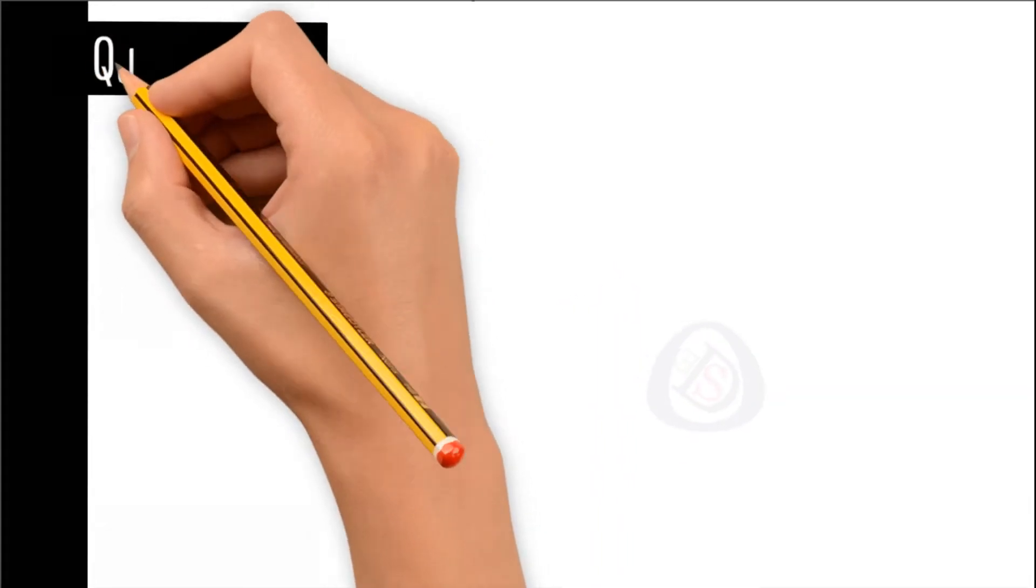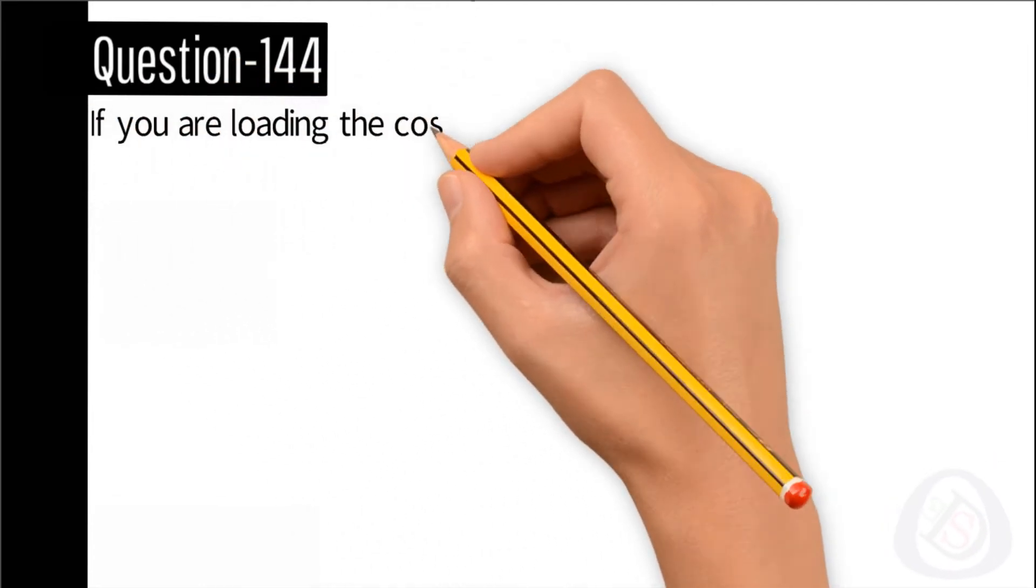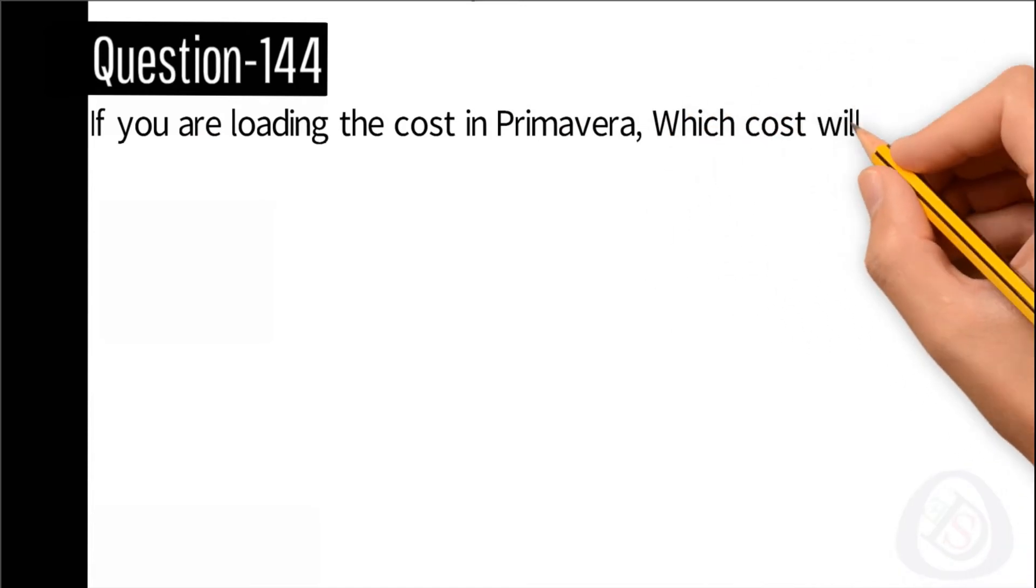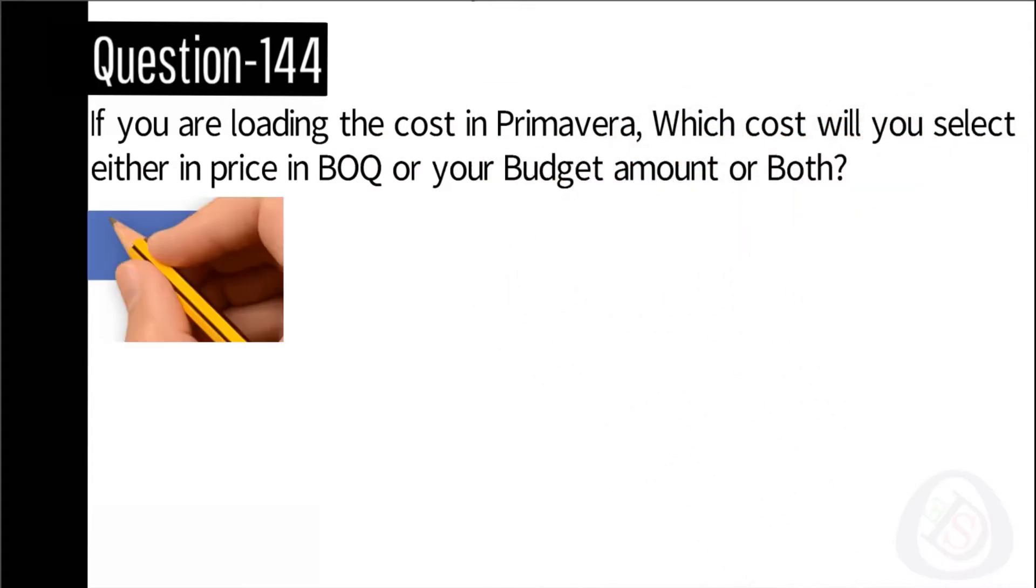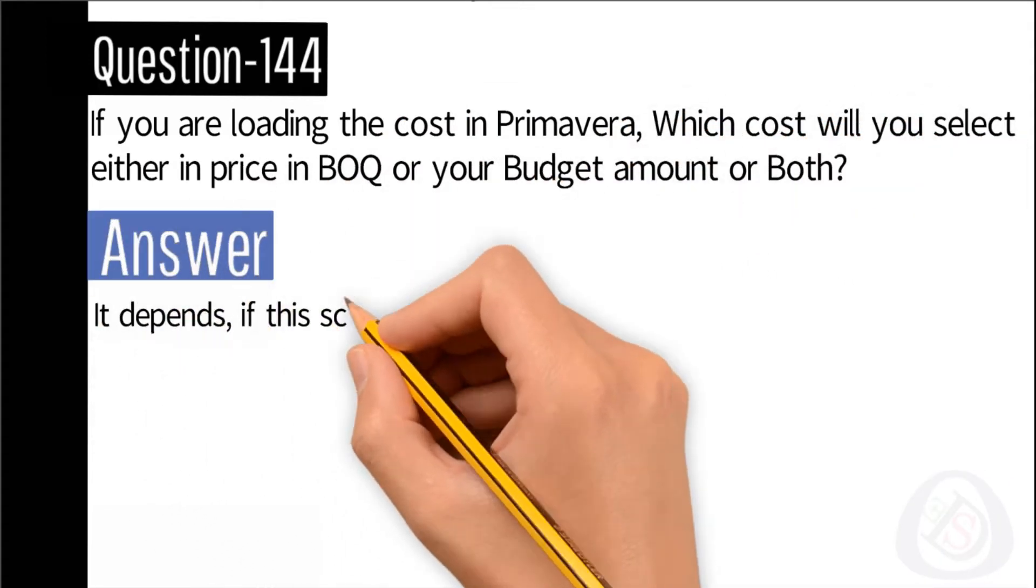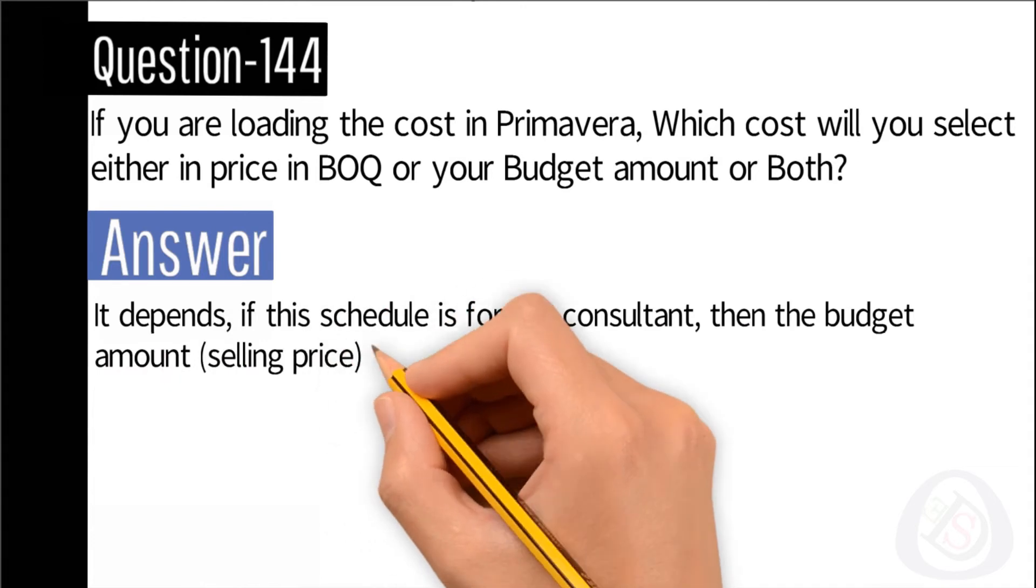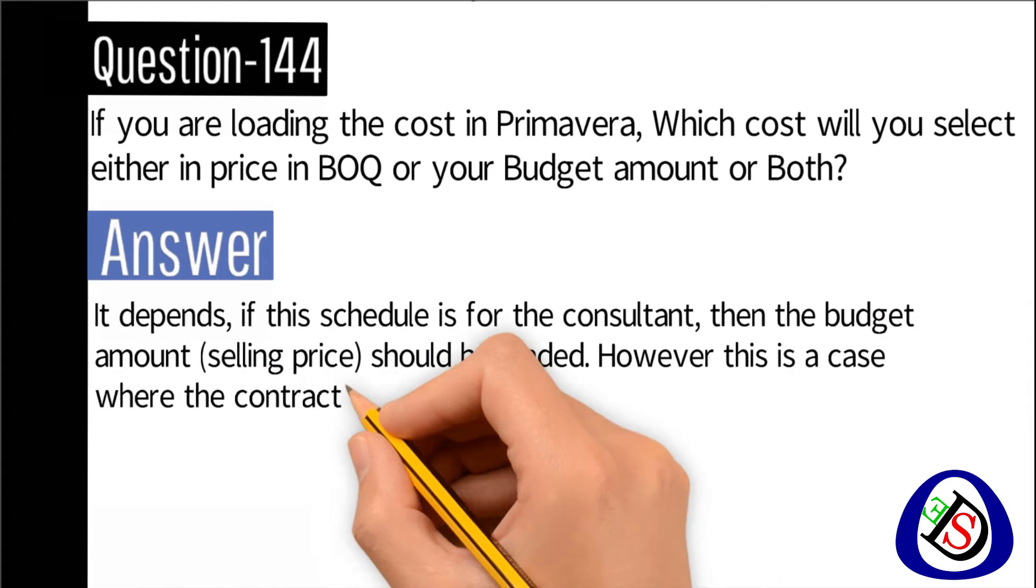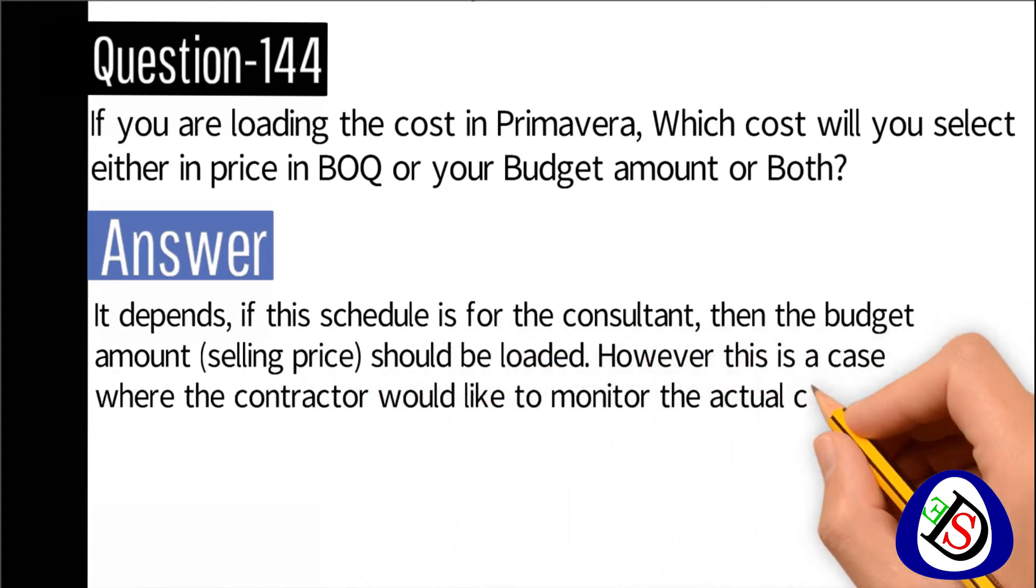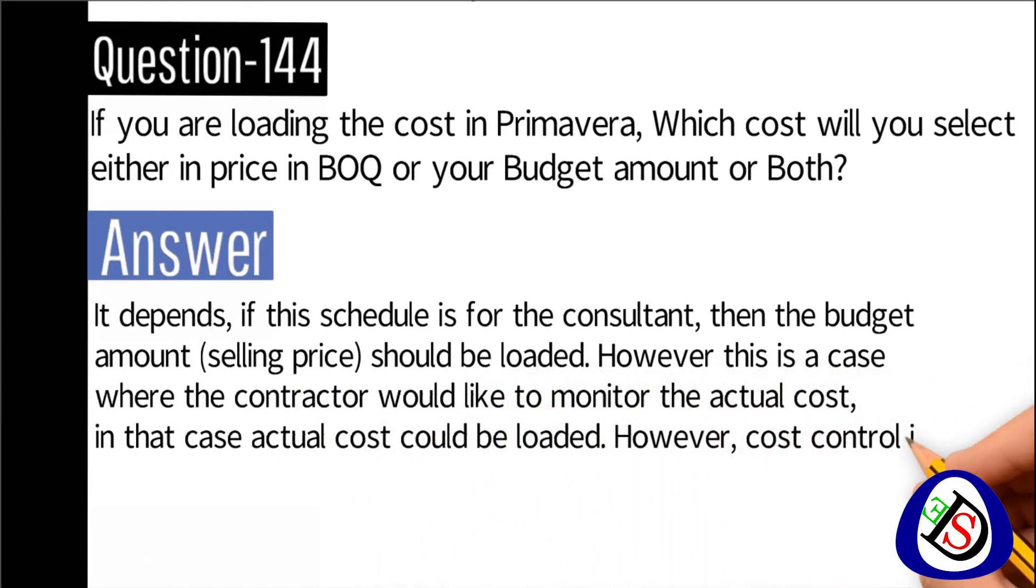Question number 144: If you are loading the cost in Primavera, which cost will you select, either in price in BOQ or your budget amount or both? Answer: It depends. If this schedule is for the consultant, then the budget amount selling price should be loaded. However, this is a case where the contractor would like to monitor the actual cost. In that case, actual cost could be loaded. However, cost control is better in Excel than Primavera.